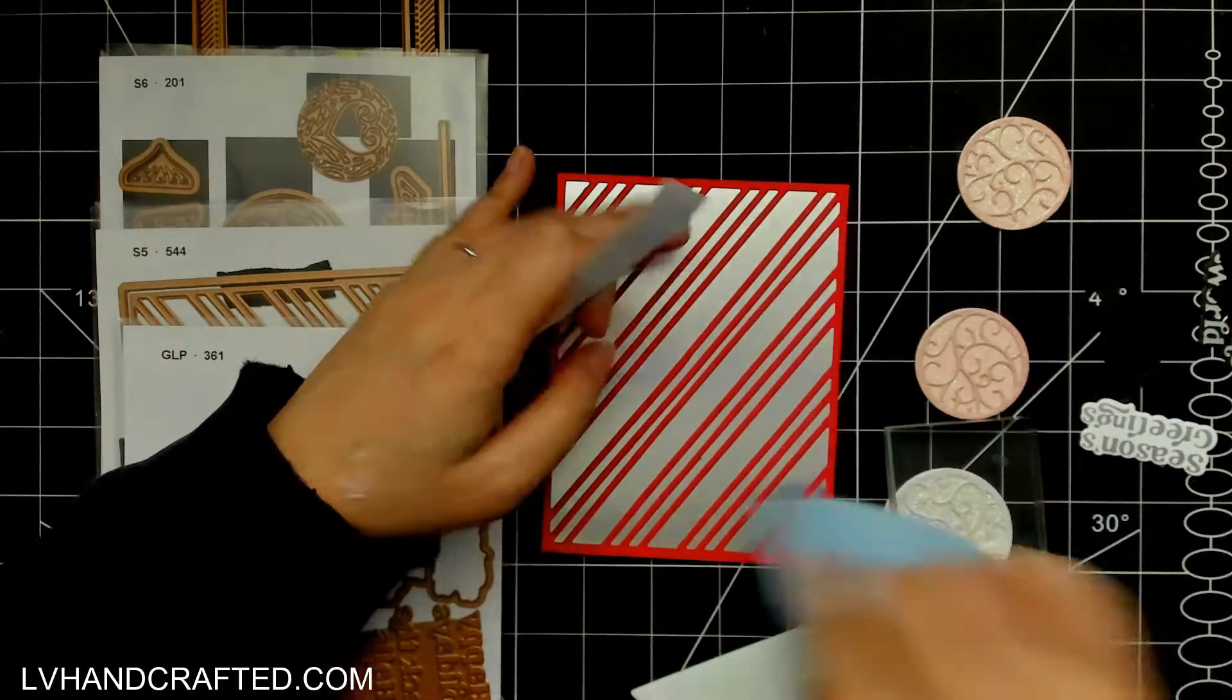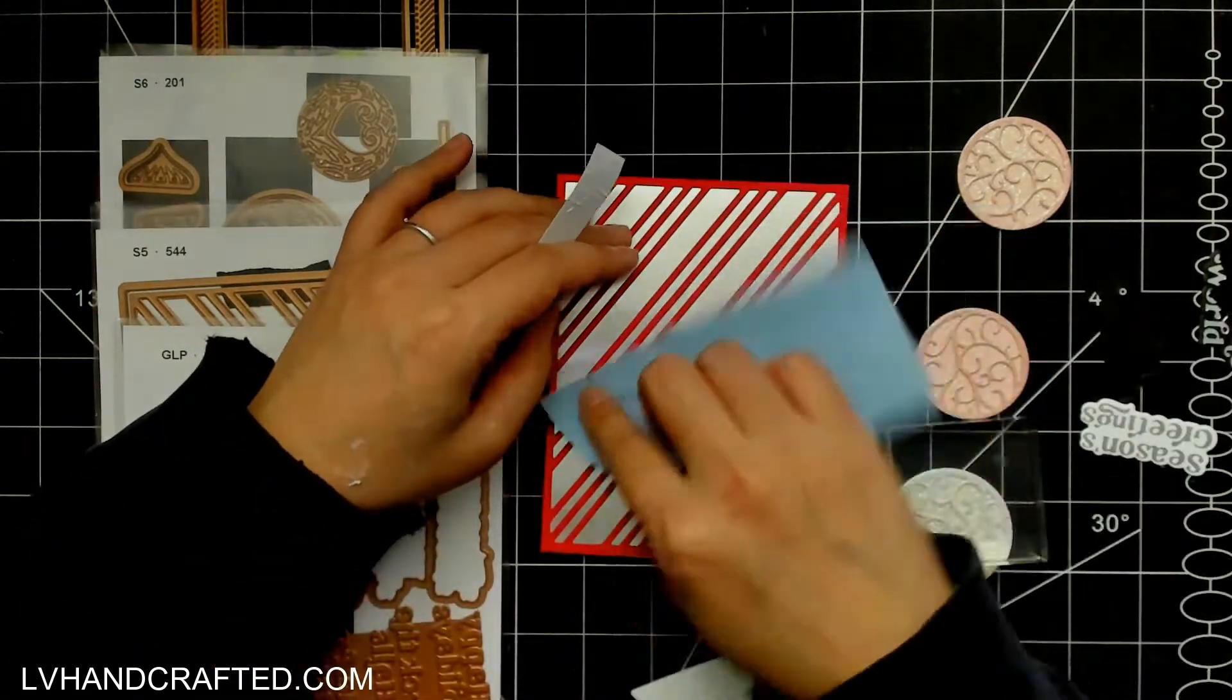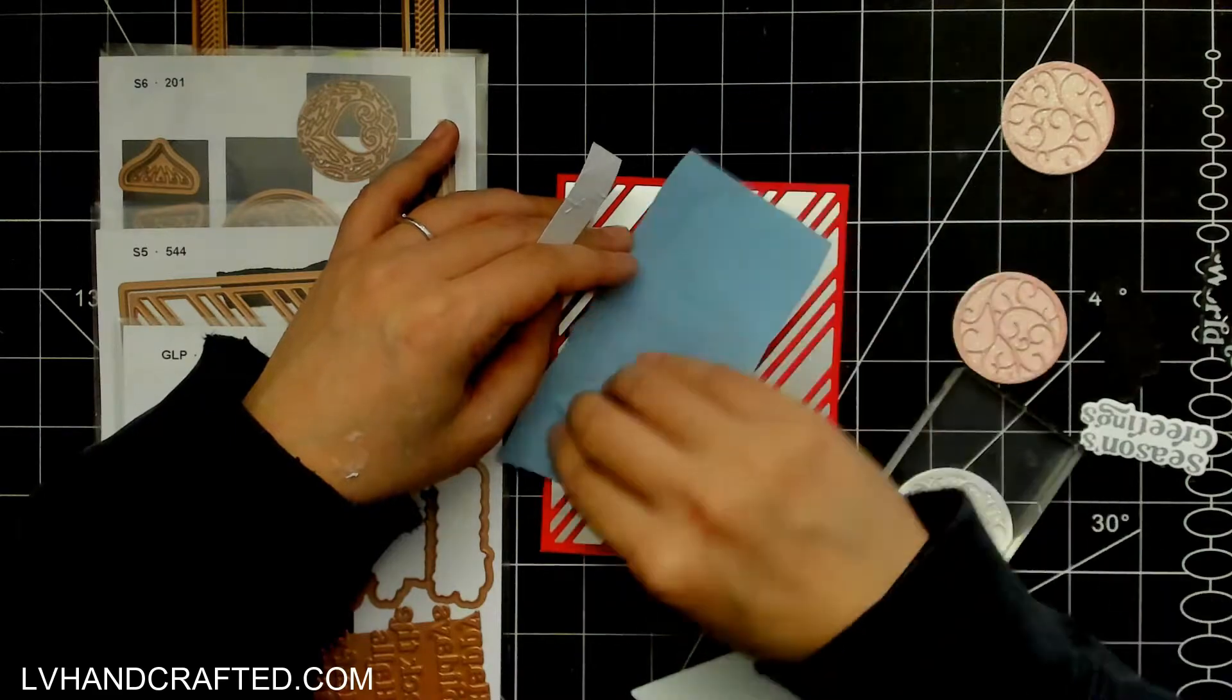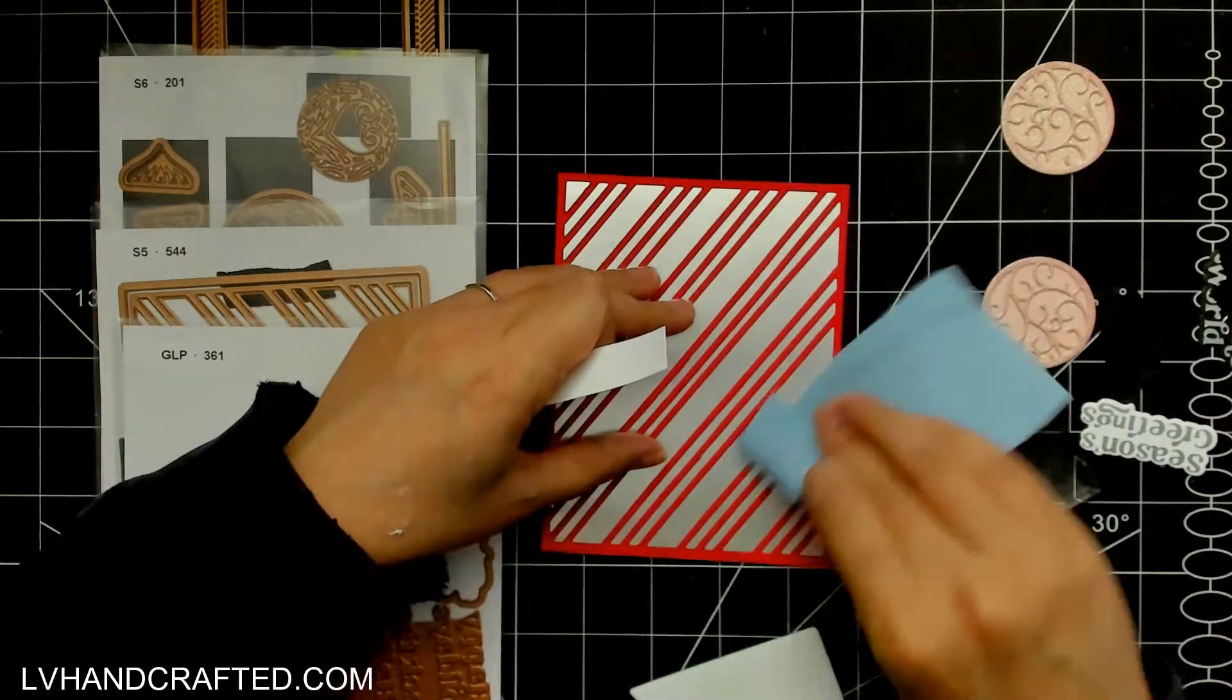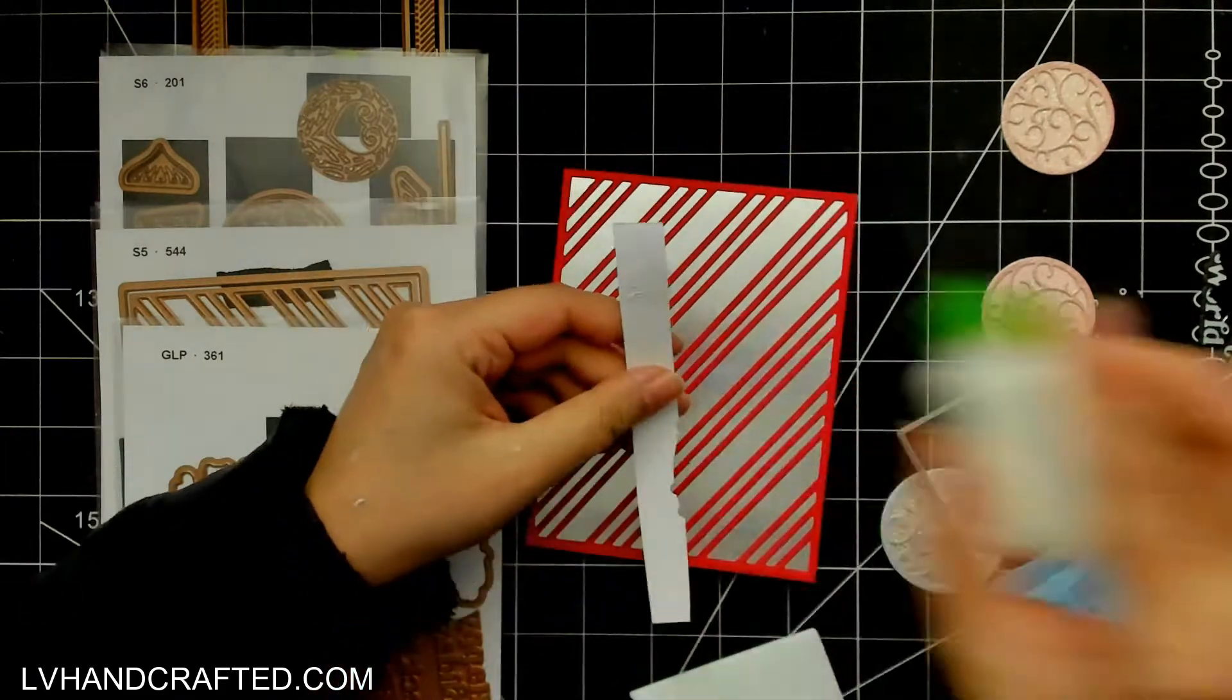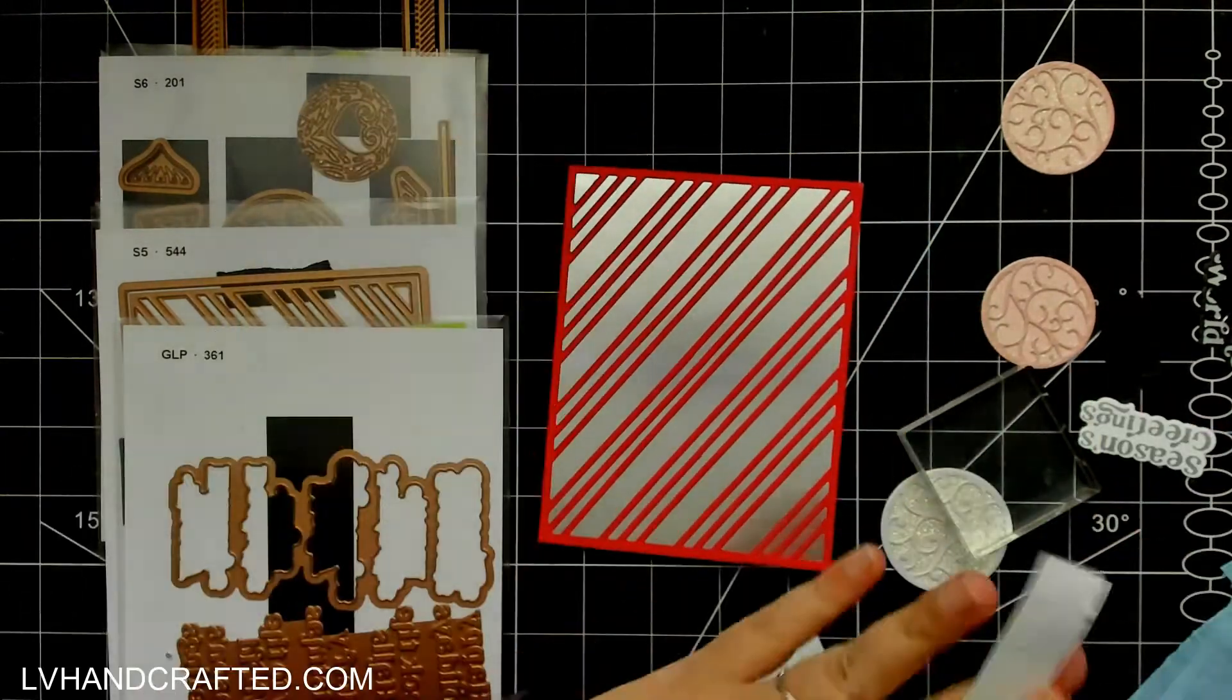And so if ever that happens to you and you need to apply some adhesive to a piece that's already stuck down but maybe is missing some glue in some areas or some tight spots you can do this trick which is to just put a little bit of glue onto some scrap cardstock and then you can slide that bit of scrap cardstock right under the die cut or the area of the die cut that is missing adhesive.